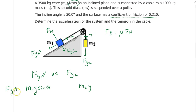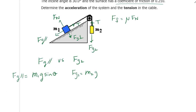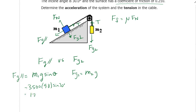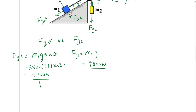Plugging in numbers: Fg parallel equals 3,500 times 9.8 times sine of 30 degrees, giving 17,150 newtons. And Fg2 equals 1,000 times 9.8, giving 9,800 newtons. The winner is Fg parallel — it's the larger force.